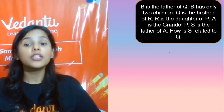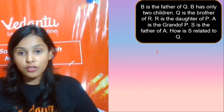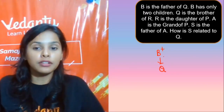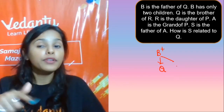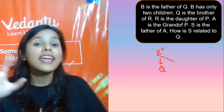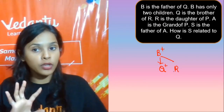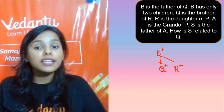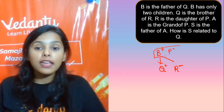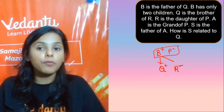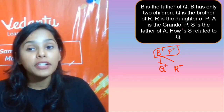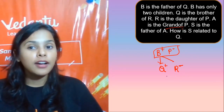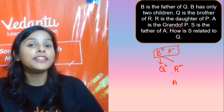Question number one: B is the father of P and Q. B is male, father of Q. B has only two children. Q is the brother of R — so Q is male. R is the daughter of P. That means A is the granddaughter of Q or R.